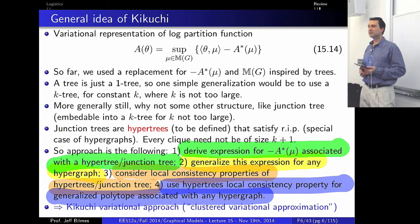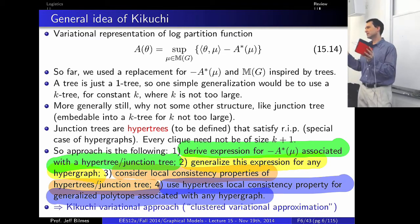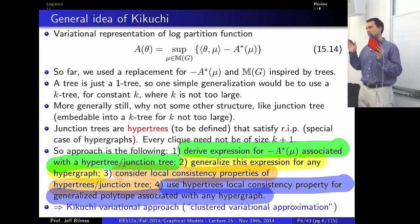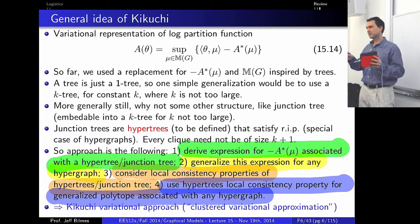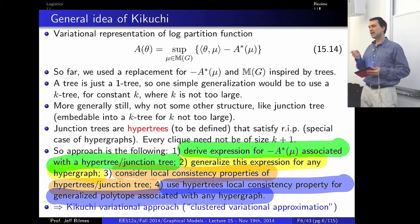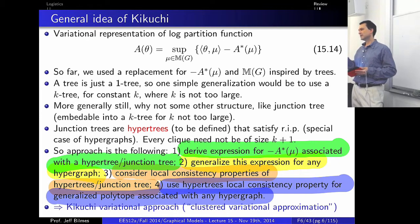What we do know is a result very similar to what we saw for the tree case: the fixed point of the Lagrangian expression equals the convergence point of a generalized belief propagation strategy on a hypergraph. The way we do belief propagation on a hypergraph is exactly analogous to loopy belief propagation, which we'll see at the end of today's lecture.